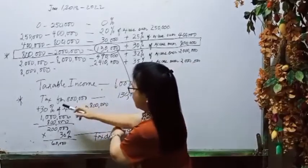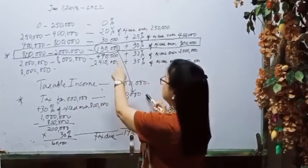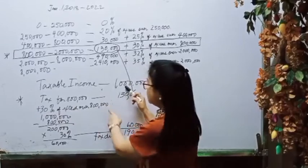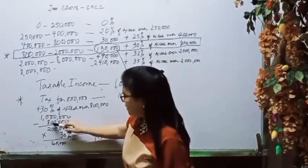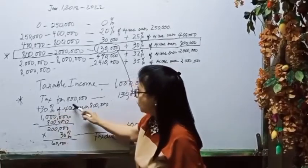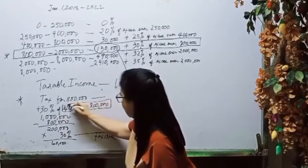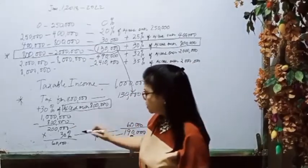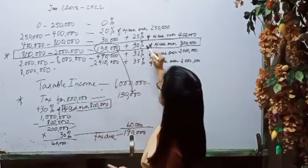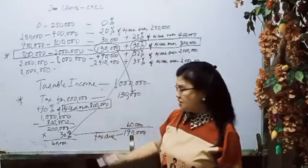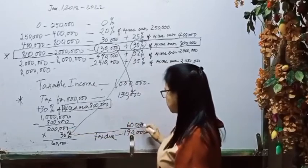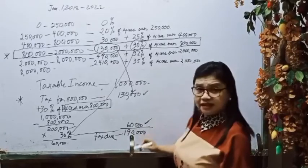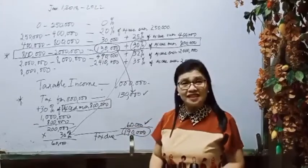Since the taxable income is 1 million, we get the excess by subtracting 800,000 from 1 million, which gives us 200,000. Then we multiply 200,000 by 30%, which equals 60,000. So our tax due is 130,000 plus 60,000, which is 190,000.